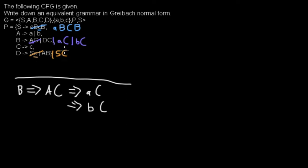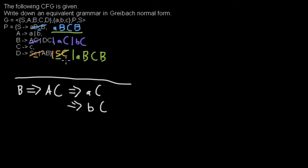The other problem is the non-terminal S in the first position. Luckily we already have the S rule, so if we replace S by all of that right-hand side, we get a new rule in Greibach normal form. I will replace S with that content, and add the new rule D expands to aBCC, keeping the C we had from before. Now this rule is in Greibach normal form.